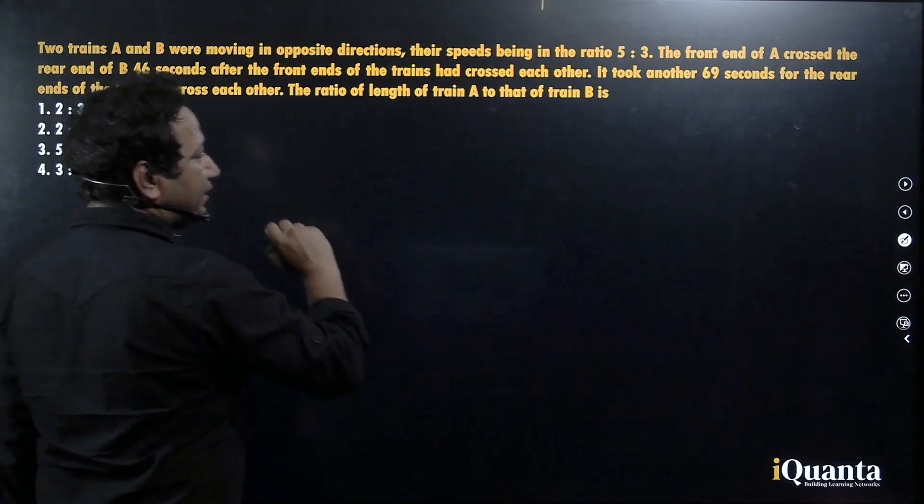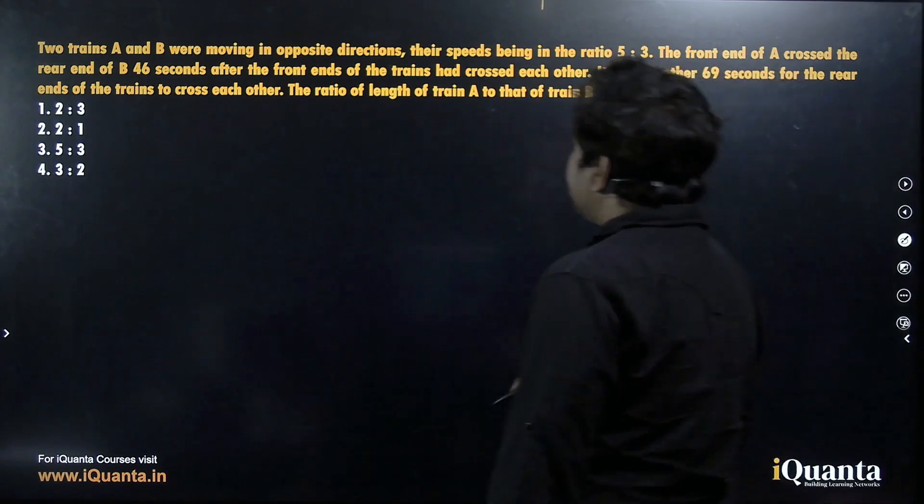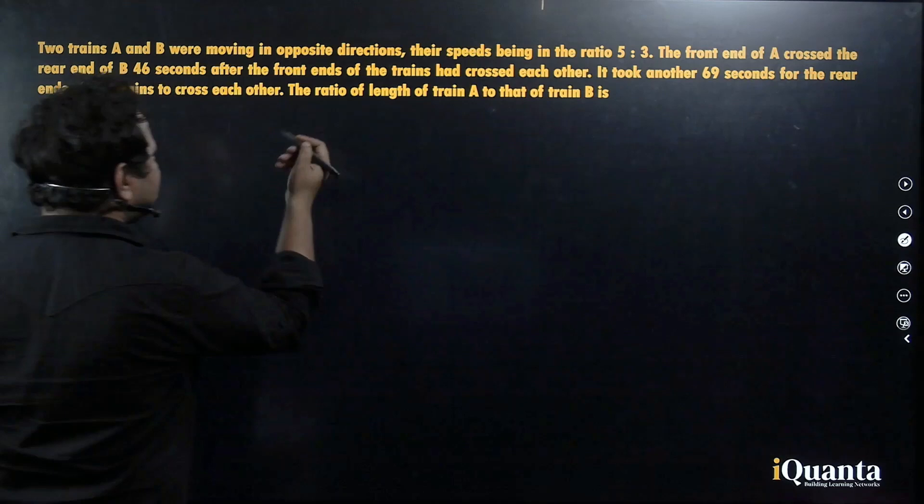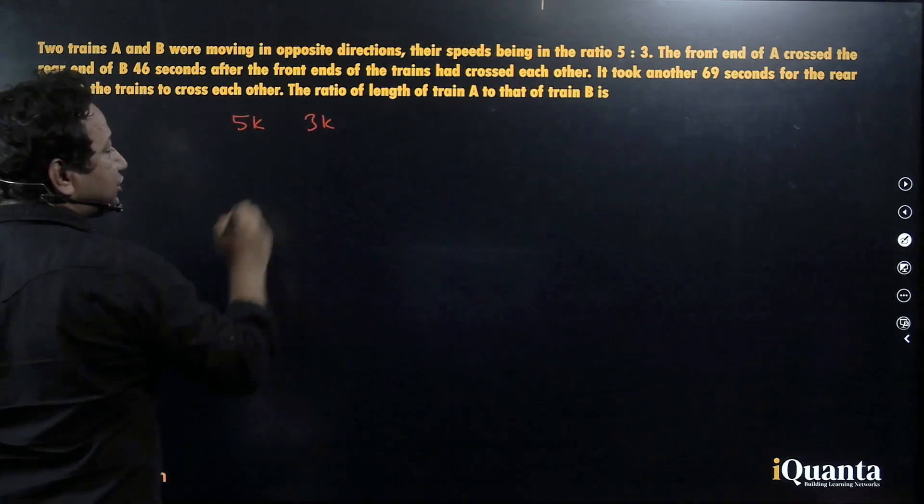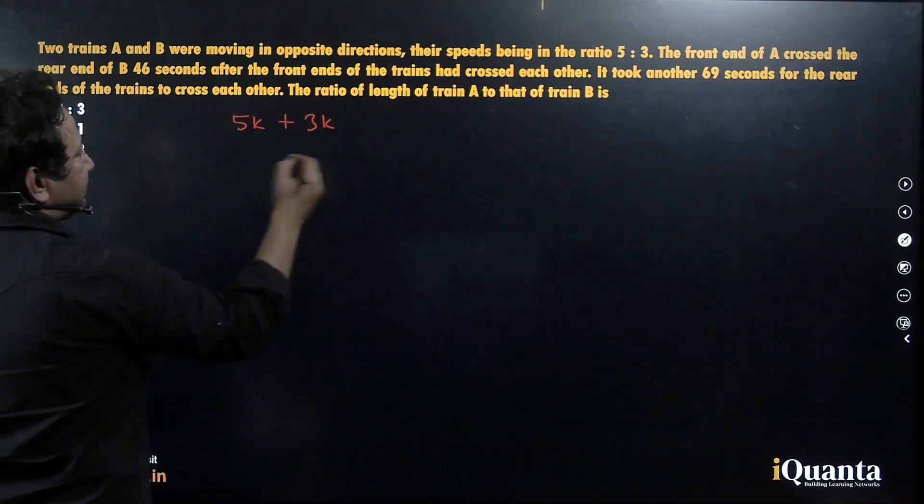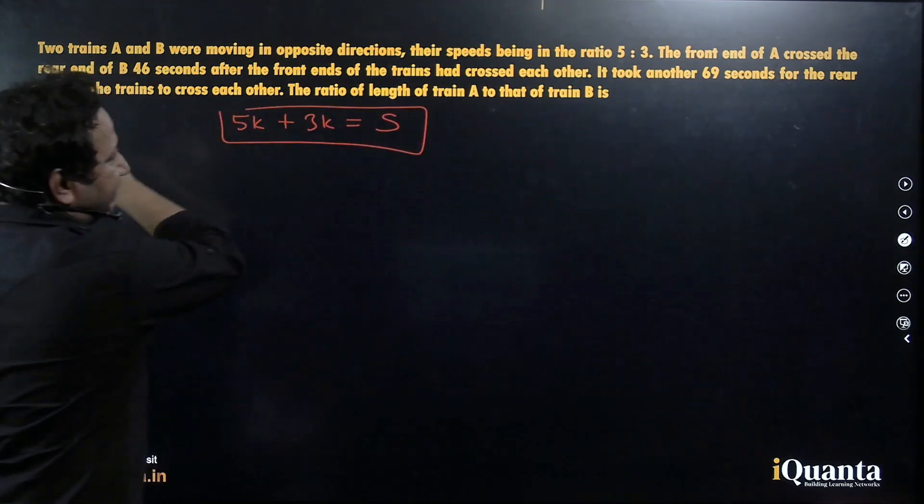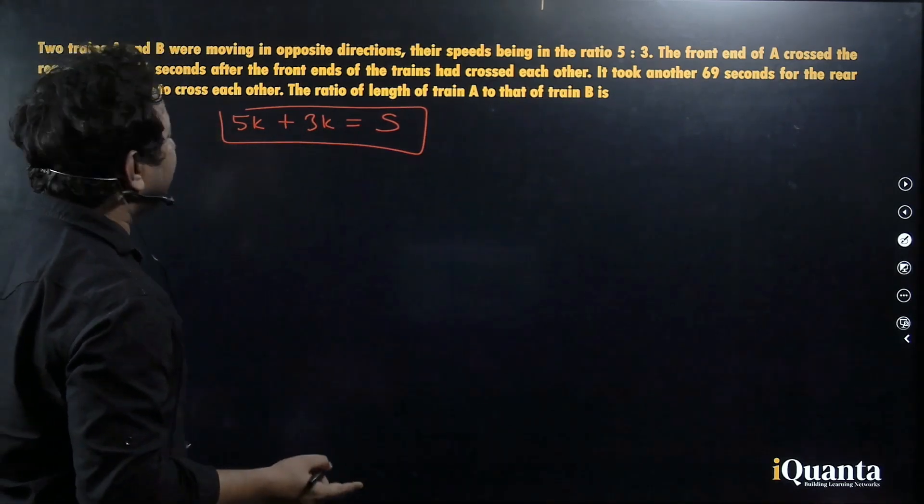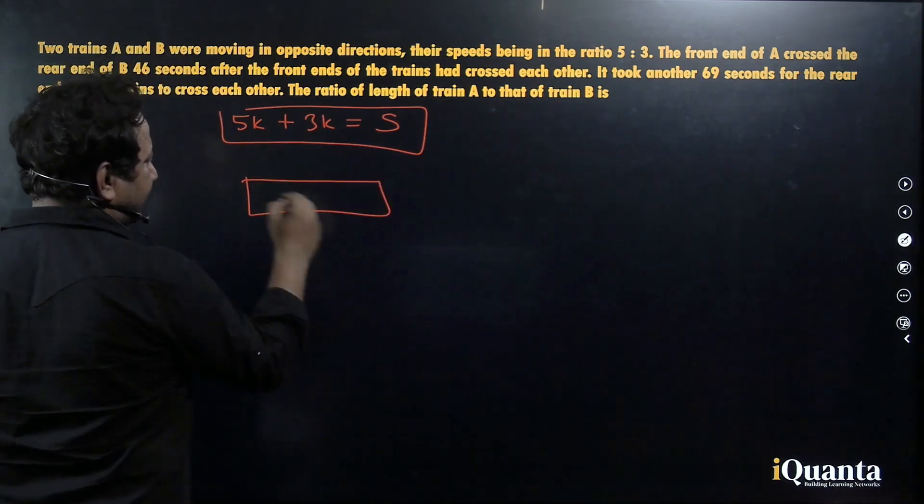We have come to a conclusion that trains are moving in opposite directions towards each other and their speeds are in the ratio of 5 is to 3. So we can assume their speeds to be 5K and 3K each and the relative speed will be sum of these speeds because they are moving in the opposite directions. This will be 8K, the relative speed. Then it says the front end of A crossed the rear end of B 46 seconds after the front ends of the trains had crossed each other.